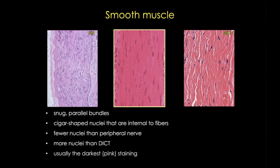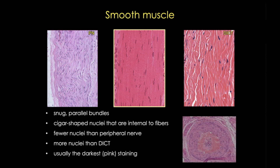Smooth muscle almost always stains more intensely than peripheral nerve. It's often, as you see here, a dark magenta pink color in an H&E stain. Now here's an exception: this is smooth muscle in the tunica media of an artery. In this case, we're looking at the location, the shape, the lack of a perineurium, and the presence of endothelial cells to provide the clues that tell us that this is smooth muscle and not peripheral nerve.